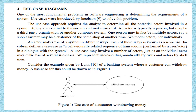A use case diagram is used to determine the requirements of a system. As an analyst, we determine the potential actors involved in the system. An actor is typically a person, but may be a third-party organization or another computer system. One person may be multiple actors — for example, a shop assistant may be a customer of the same shop at another time. So we model actors, not individuals.